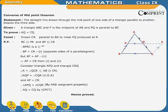Consider triangles APQ and CRQ. We get angle A equals angle QCR, since AB is parallel to CR. Angle AQP equals angle CQR — vertically opposite angles. And AP equals CR. Therefore, triangle APQ is congruent to triangle CRQ by AAS congruence, which gives AQ equals CQ by CPCT.